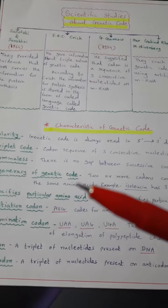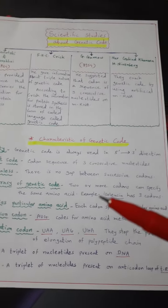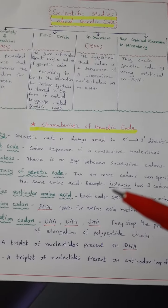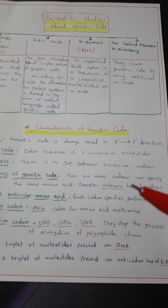Degeneracy of genetic code. Two or more codons can specify the same amino acid. For example, isoleucine has 3 codons.